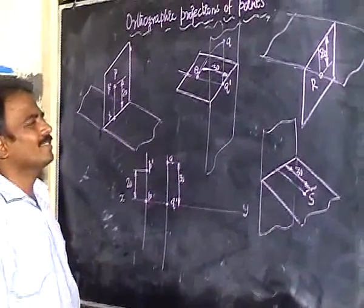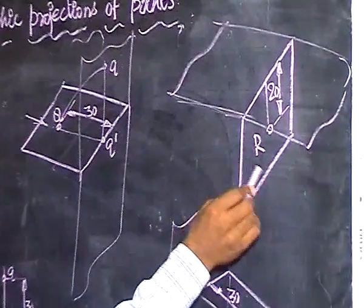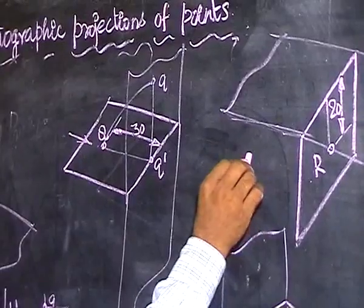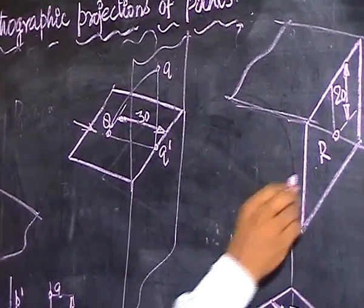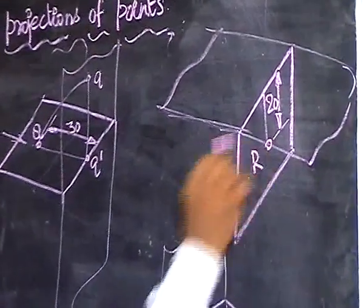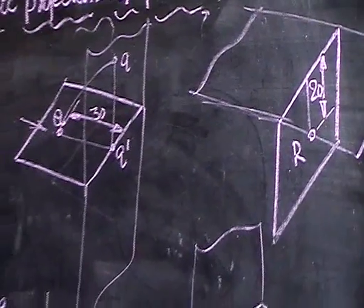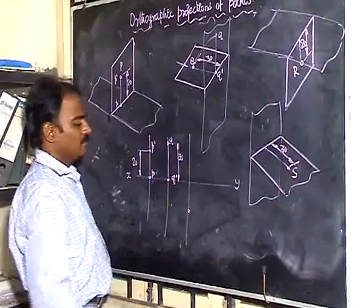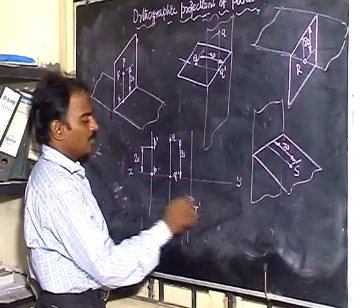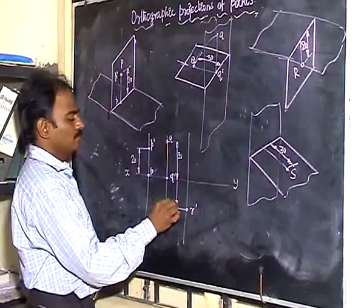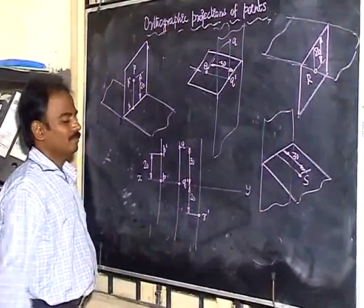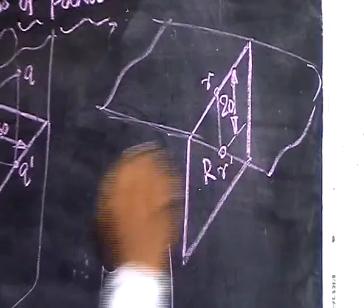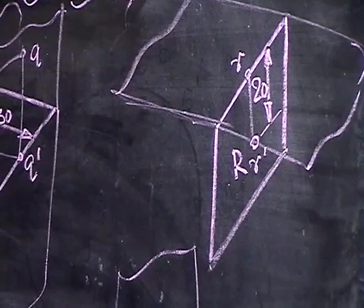Go to point R. R is a point on the vertical plane common to the third quadrant and fourth quadrant. R is defined as a point 20mm below the HP. Take a reasonable distance, draw one projector for R, and take 20mm below the x-ray line. It has no breadth, so the top view lies on the x-ray line. Therefore small r lies on the x-ray line.